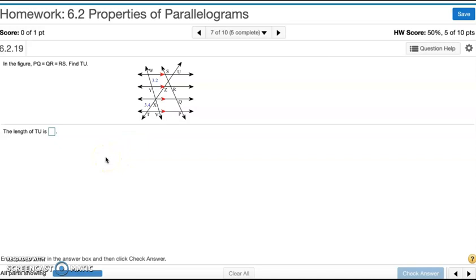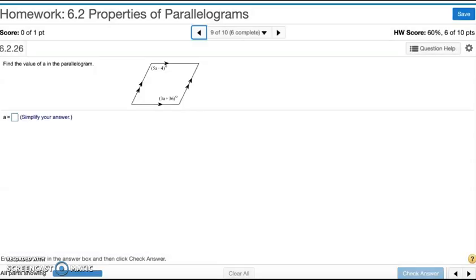So the final length of TU, I do 3.4 times 3. Doing so gives me 10.2. That's number seven.